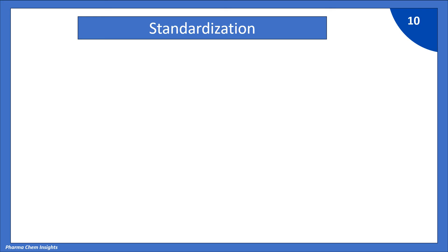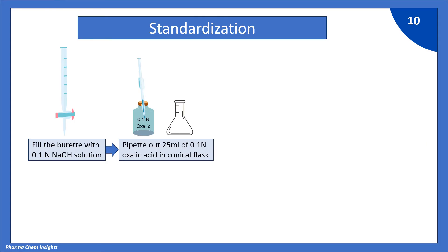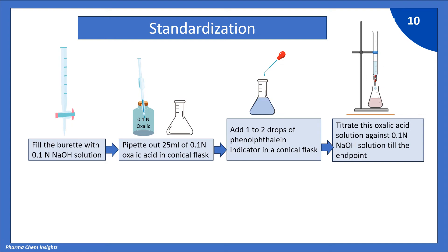Now all solutions are ready so let us see the titration part. So first step is fill the burette with 0.1 normal NaOH solution. Second step pipette out 25 ml of 0.1 normal oxalic acid in conical flask. Third step is add 1 to 2 drops of phenolphthalein indicator in a conical flask. At this stage your solution will be colorless. Titrate this oxalic acid solution against 0.1 normal NaOH solution from the burette till the end point i.e faint pink color.